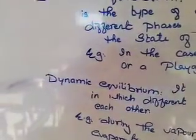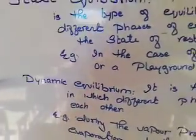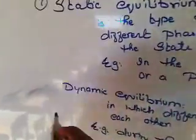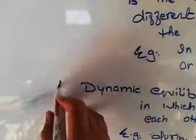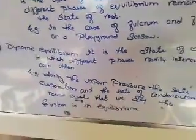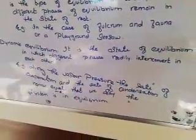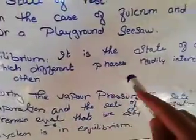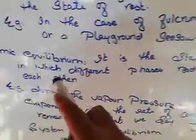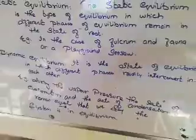The next type is dynamic equilibrium. Dynamic equilibrium is also a type of equilibrium — it is a state of equilibrium in which different phases repeatedly inter-convert into each other. In dynamic equilibrium, many phases change and inter-convert.